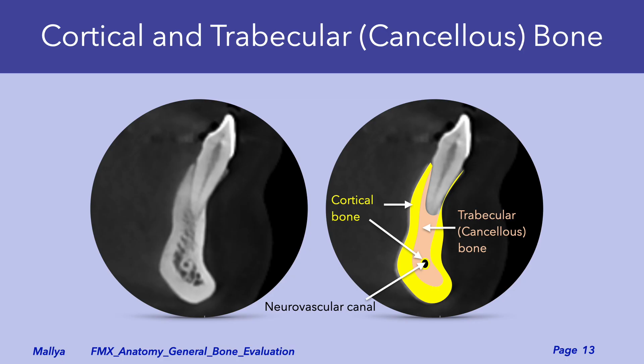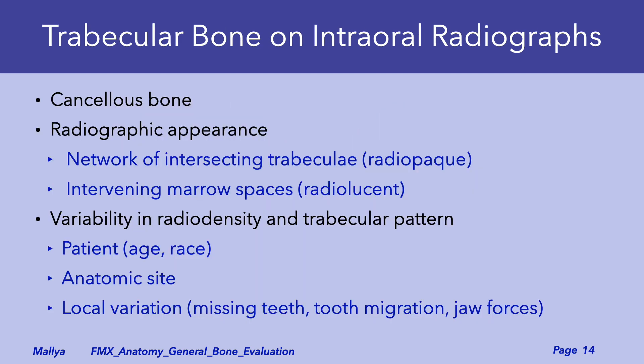Before we analyze the radiological appearances of bone, let's quickly review the structure of bone. The outer surface is made up of compact or cortical bone, which is highly mineralized and thus appears markedly radiopaque. The cortical bone encloses trabecular bone, which houses the bone marrow. The trabecular or cancellous bone is comprised of a network of intersecting bony plates or trabeculae, which appear radiopaque, and the intervening radiolucent spaces are occupied by bone marrow tissue. There is considerable variability in the radiographic appearance of trabecular bone, both in terms of its radio density and its trabecular architecture.